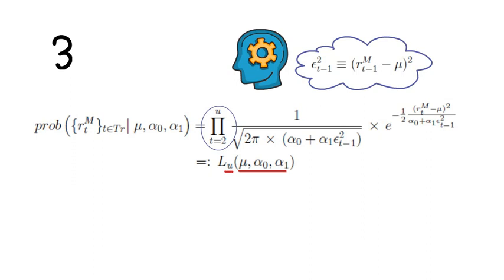Also note, I haven't incorporated the unconditional probability of the first observation, which is the probability of R_1^M conditional on F₀ and on the three parameters of the model. Now I've done so to focus only on the essentials. As long as the training set is sufficiently large, that simplification will not affect the results.